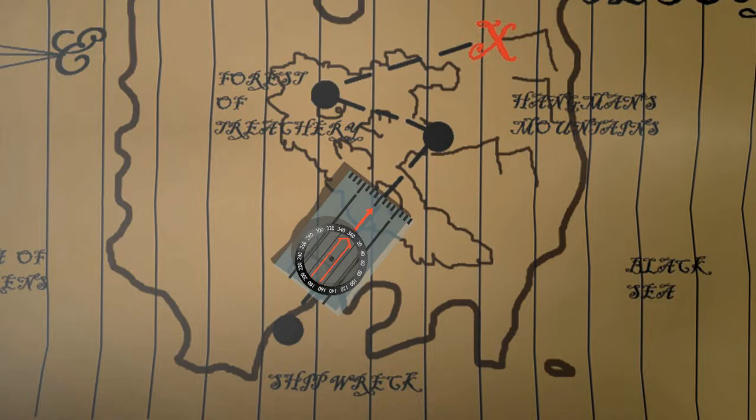Now, we know that the red arrow is pointing where we want to go on the map. So we need to make it point the right way in real life. We know the compass will always point north. So let's point the hollow arrow north on the map. Turn the dial to point it straight north. The lines of longitude on the map will help.